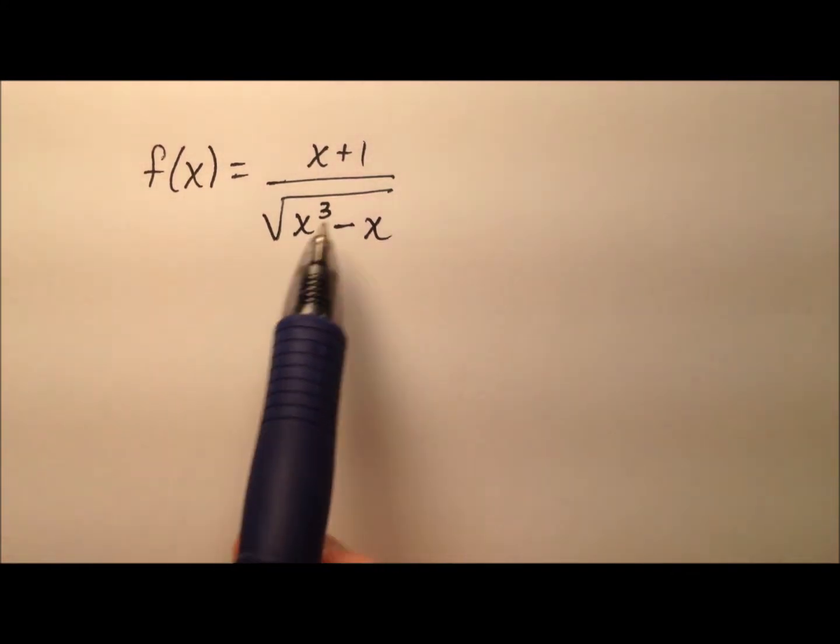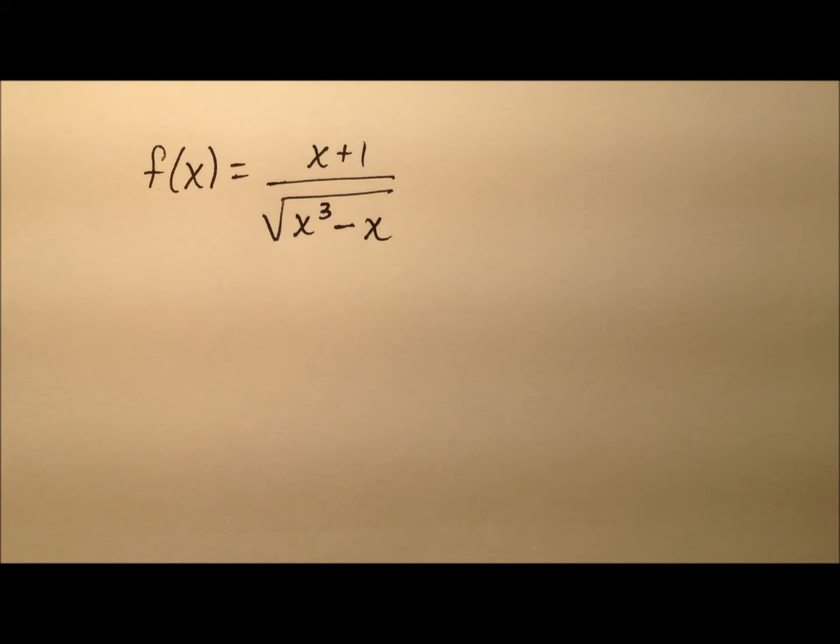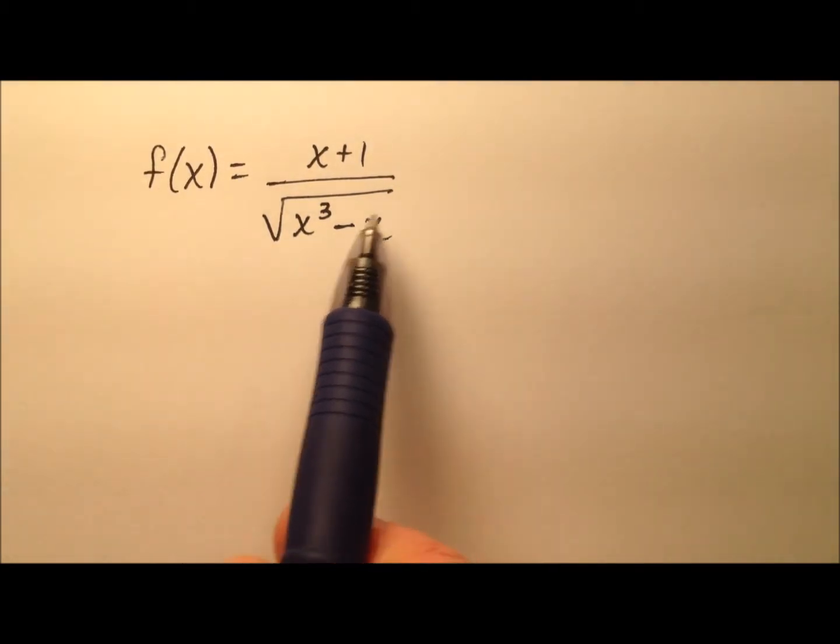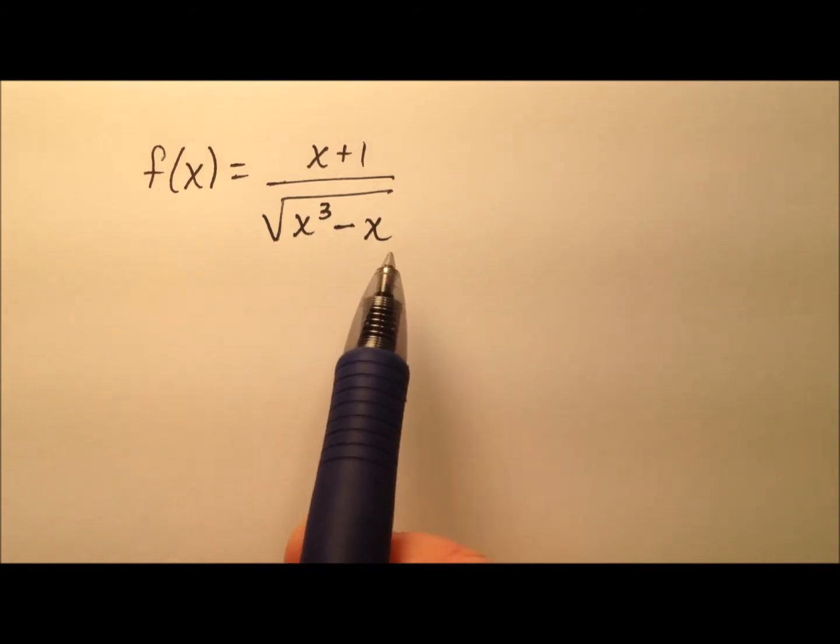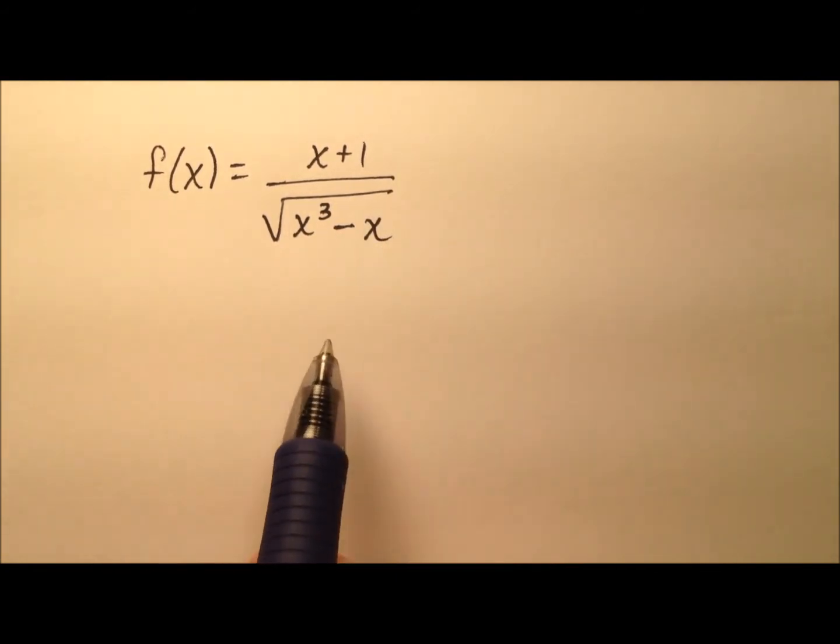In this example, we're going to determine the domain of this function f of x. If you'd like to try this first, pause the video and do so, then come back and we'll work it together. Looking at this, we have a square root expression here, which is going to hamper our domain. So instead of being all real numbers, we'll have some limited domain. Also, the square root is in the denominator, so there are a couple of things to consider.